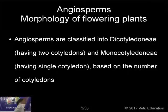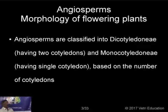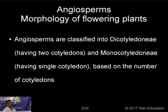The angiosperms are classified into dicotyledons and monocotyledons depending upon the number of cotyledons they have. Dicots generally have two cotyledons and monocots have a single cotyledon.